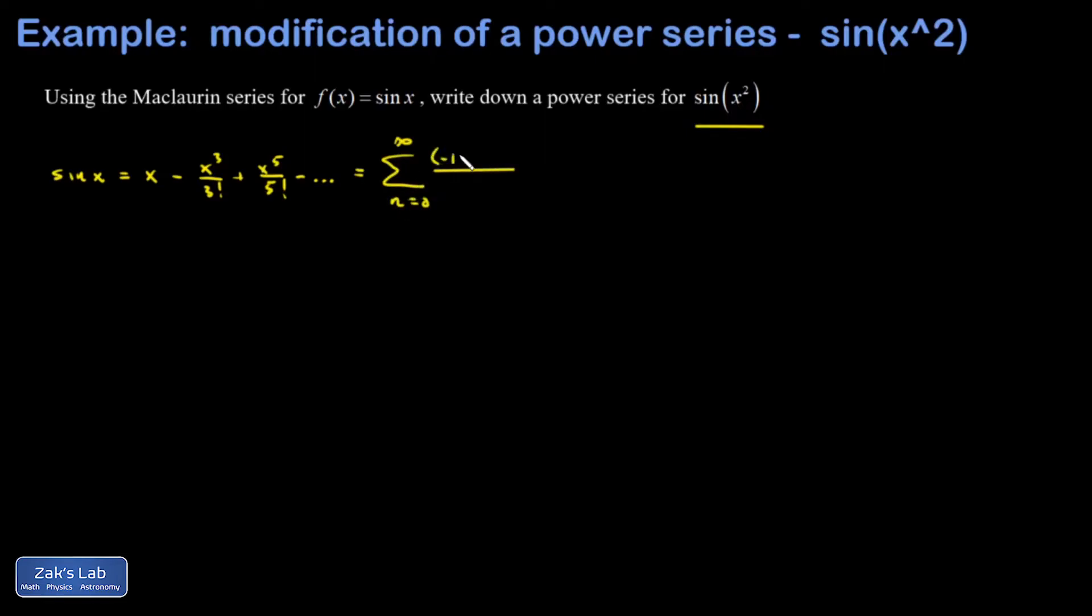It starts with a positive term, so that's negative one to the n. My first term is negative one to the zero, giving me a positive. And then I only want odd powers of x, so I'm going to say x to the 2n plus 1. When I plug in n equals zero, I get x to the 1. Plug in n equals 1, I get x to the third and so on.